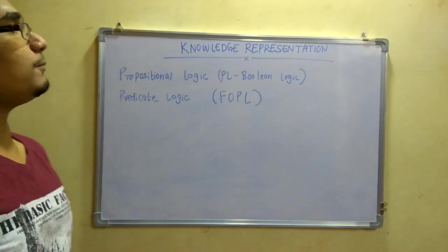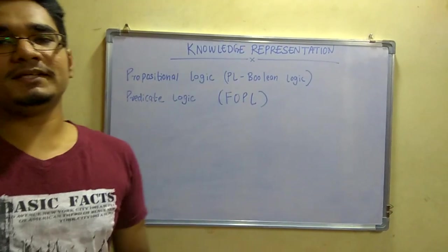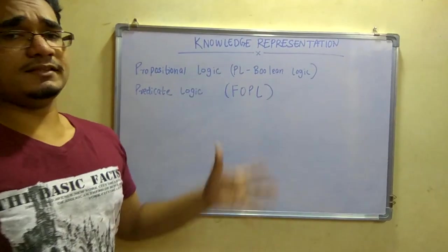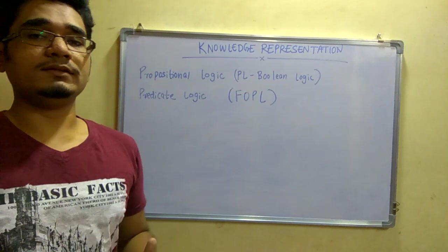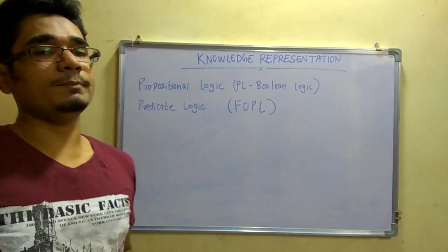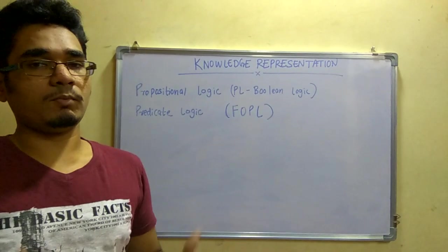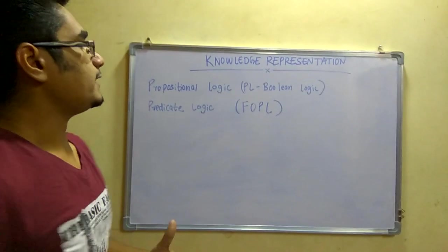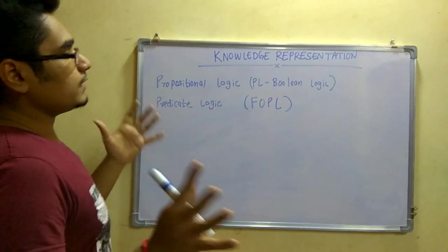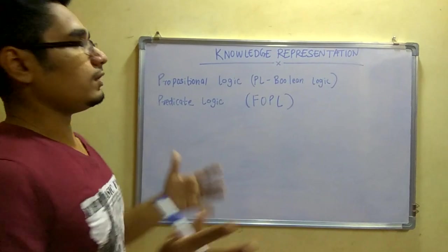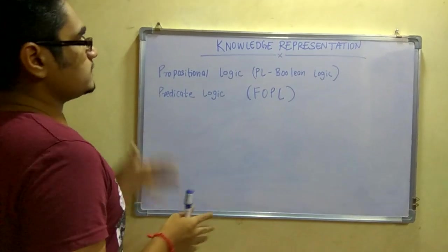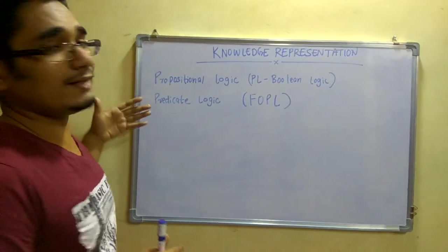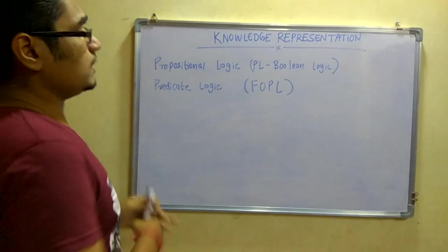Today we will be discussing knowledge representation in artificial intelligence. This is the main concept used to impart knowledge into robotic agents. There are two logics in knowledge representation: propositional logic and predicate logic.